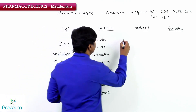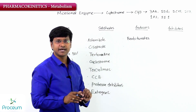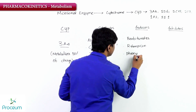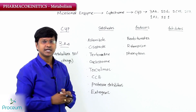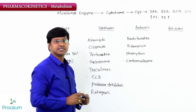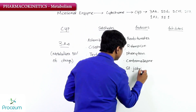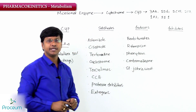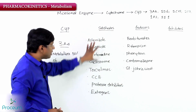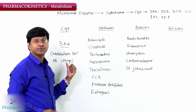The inducers of CYP3A4 include barbiturates, rifampin (a first-line anti-tubercular drug), phenytoin (an anti-epileptic drug), carbamazepine, and St. John's Wort. Whenever these inducers are given along with the CYP3A4 substrates, the dosage of the substrate should be increased, because these enzyme inducers will increase the metabolism of those drugs.